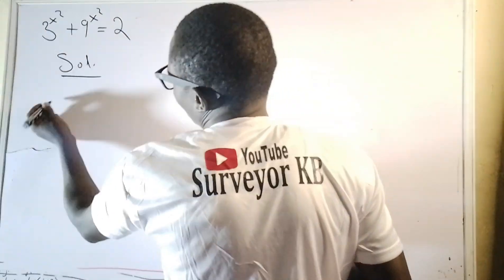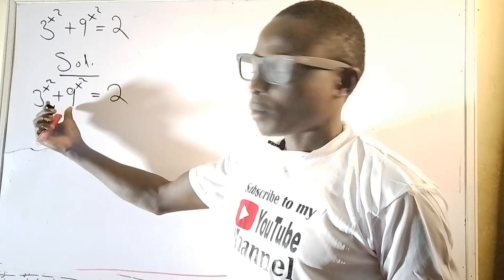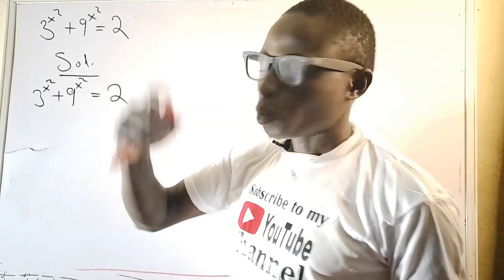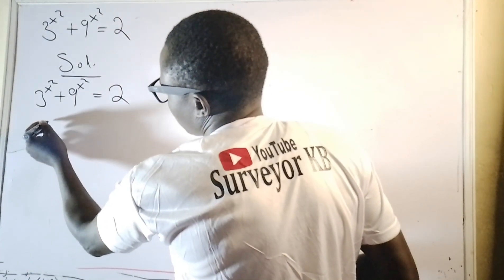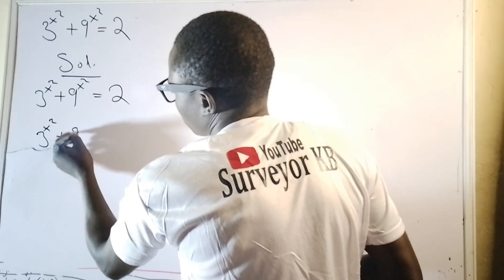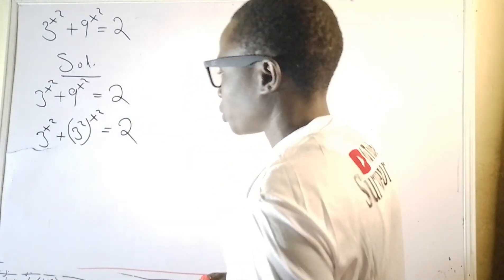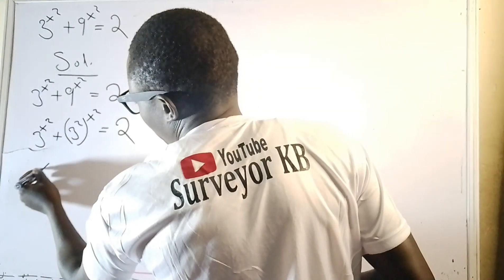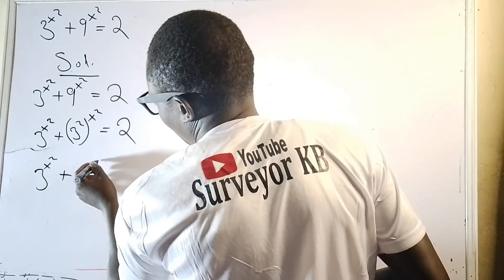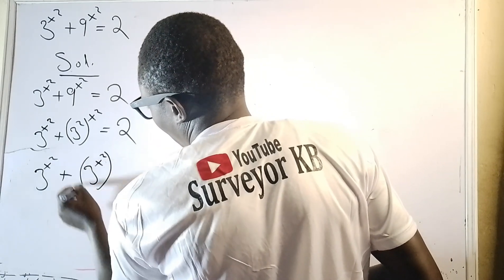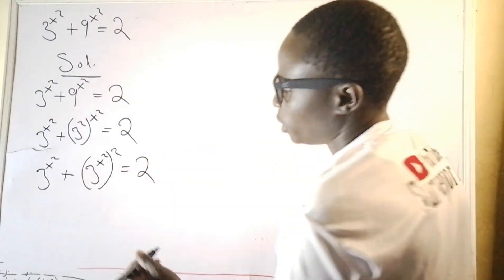We know that 3 raised to the power 2 gives us 9. So I can write this as 3 raised to the power x squared plus 3 squared raised to the power x squared, which equals 3 raised to the power 2x squared, by the law of indices. This equals 2.